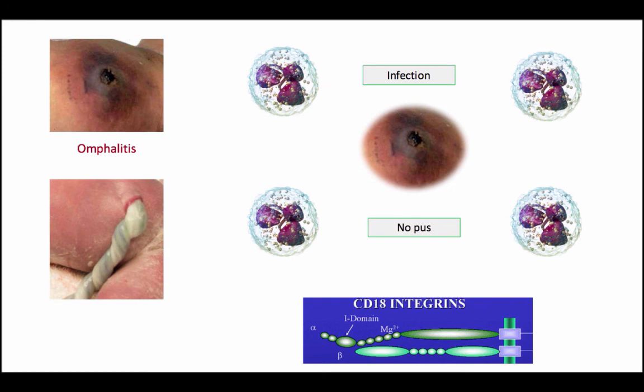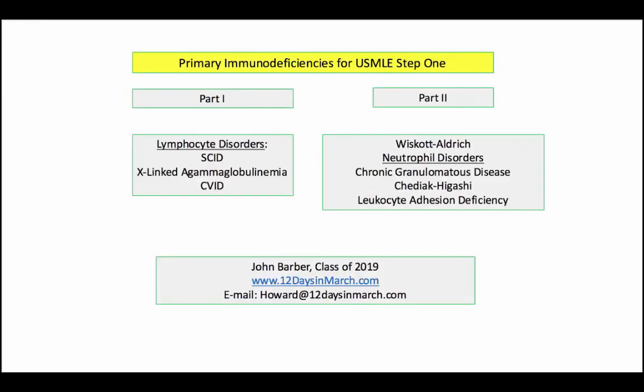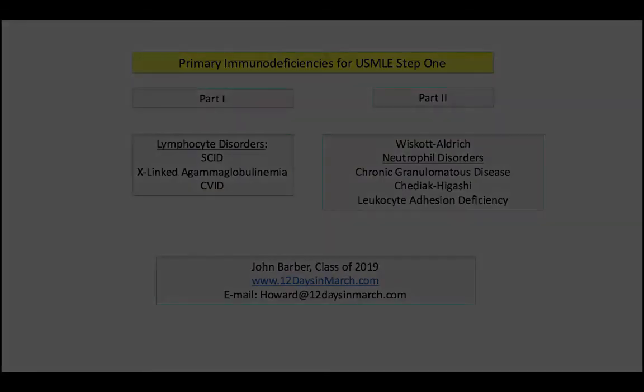And finally, a wound infection without pus — note, however, there are plenty of WBCs; they just never leave the circulation. That concludes this two-part video series on the primary immunodeficiencies for USMLE Step 1. Much gratitude to John on his approach to the disorders and finally getting me involved in this very high-yield topic. If you have any questions, comments, or concerns, please email me at 12 Days in March. Thank you.